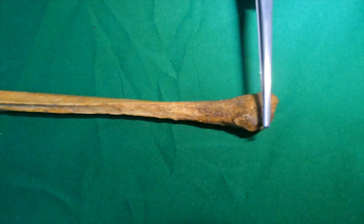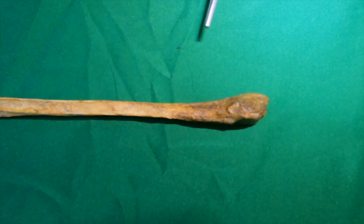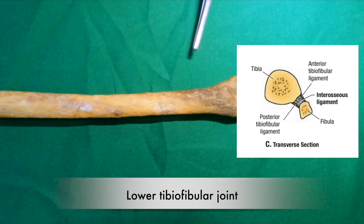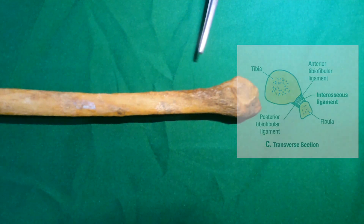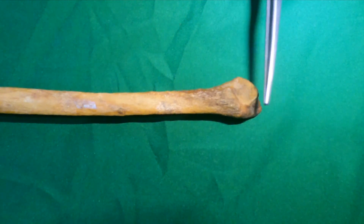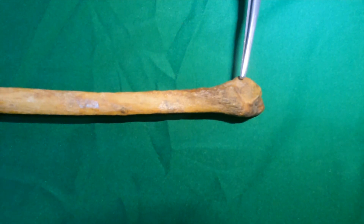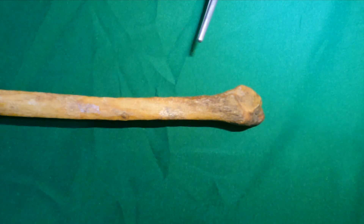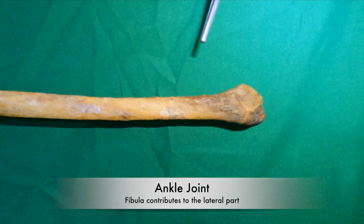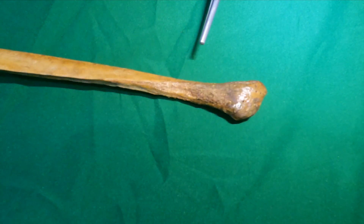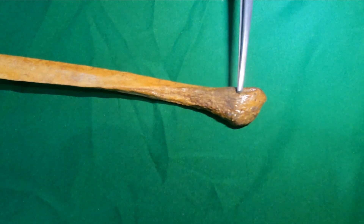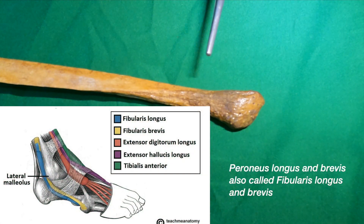The lower end of the fibula is expanded to form the lateral malleolus. The medial surface of the lateral malleolus bears a facet to articulate with the lateral surface of the talus, forming the lateral part of the ankle joint. The posterior aspect of the malleolus is marked by a shallow groove to lodge the tendons of peroneus longus and peroneus brevis.